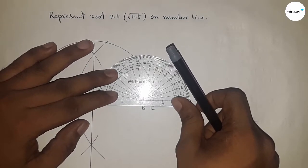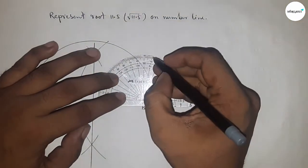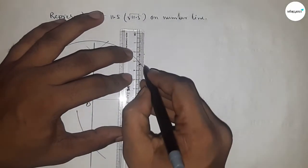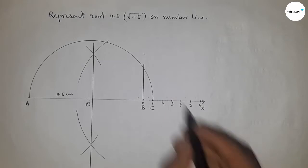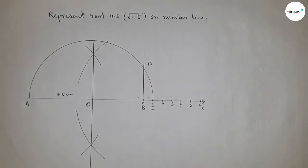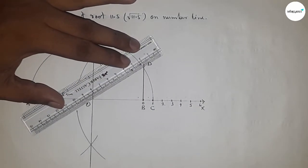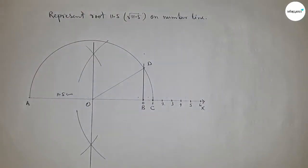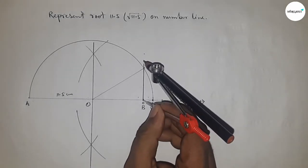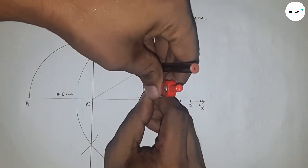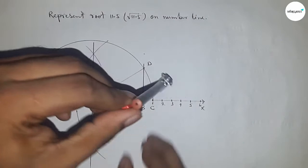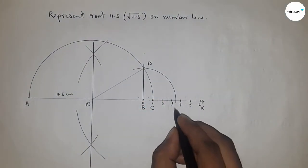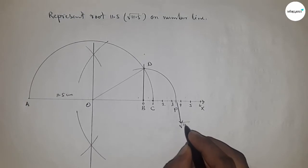Draw a 90-degree angle on point B using the protractor. Now join this to get the perpendicular line, and this is point D. Now join O and D. Now take the length BD with the compass and draw an arc which meets the number line at point B'. This is the representation of root 11.5 on the number line.